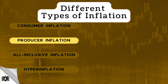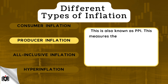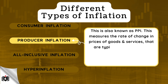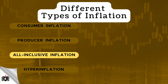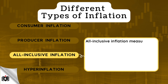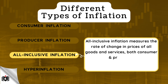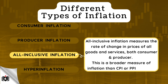Producer inflation is another type of inflation, also known as PPI. This measures the rate of change in prices of goods and services that are typically purchased by businesses. This includes things like raw materials, intermediate goods, and energy. Another type of inflation is known as all-inclusive inflation, which measures the rate of change in prices of all goods and services for both consumer and producer. This is a broader measure of inflation than CPI or PPI.